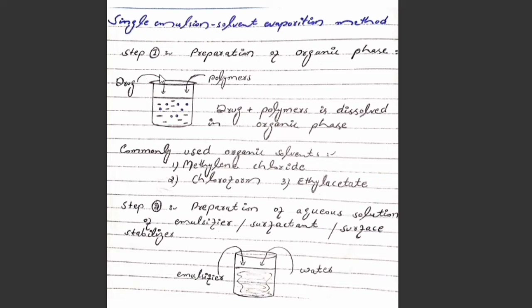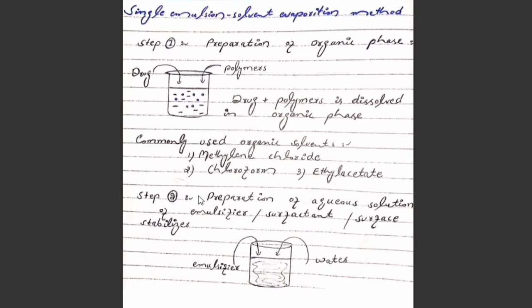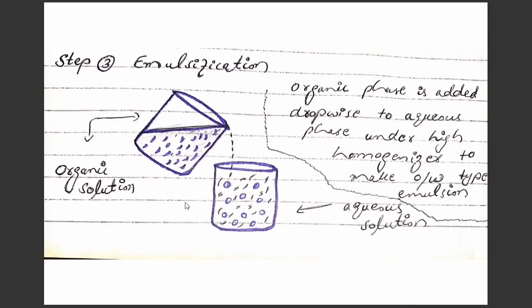In this method, first we prepare the organic phase: we dissolve the drug and polymers in an organic solvent. Commonly used organic solvents include methylene chloride, chloroform, and ethyl acetate. In the second step, we prepare an aqueous solution of the emulsifier. In the third step, we do emulsification by adding the organic solution dropwise to the aqueous solution, obtaining an oil-in-water emulsion.